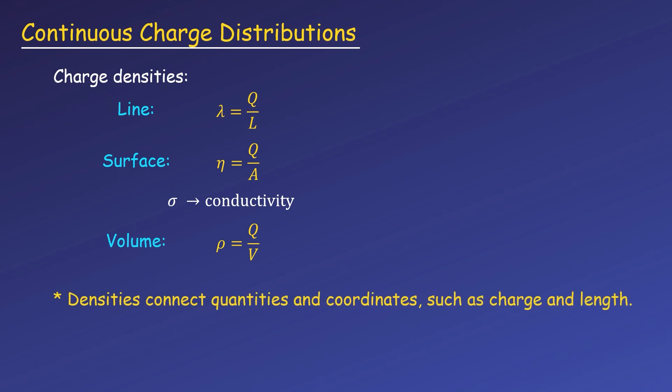Densities connect quantities and coordinates. For cases where the density is uniform or constant, we can write charge as the linear charge density times a length, surface charge density times area, or volume charge density times volume. This assumes the charge density is uniform, but if not, we can just use a little calculus to integrate and find the total charge in some region of the object.